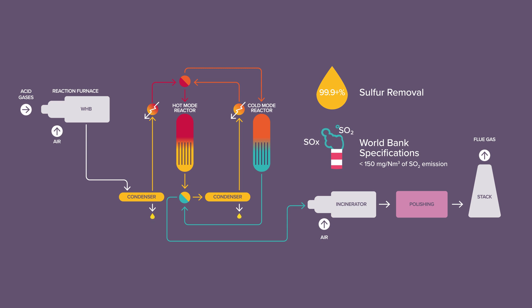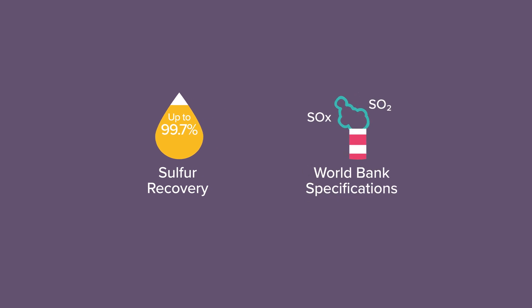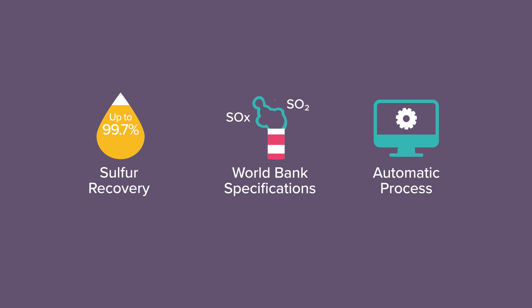SmartSulf is a sub-dewpoint sulfur recovery process with the following advantages: up to 99.7% sulfur recovery without TGTU, possibility to reach World Bank specification with polishing, easy operability, fully automated process without need for more follow-up than a conventional Klaus unit.